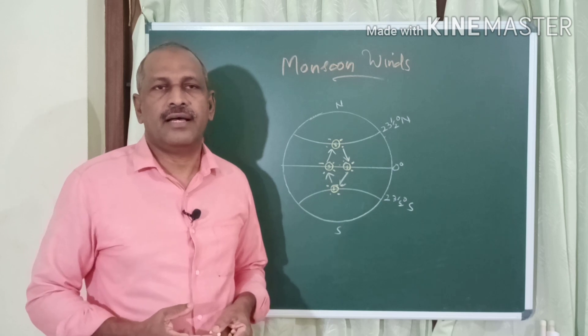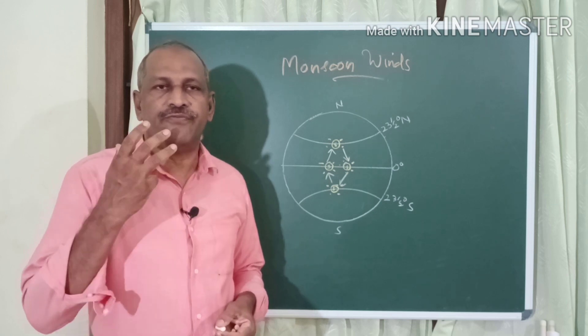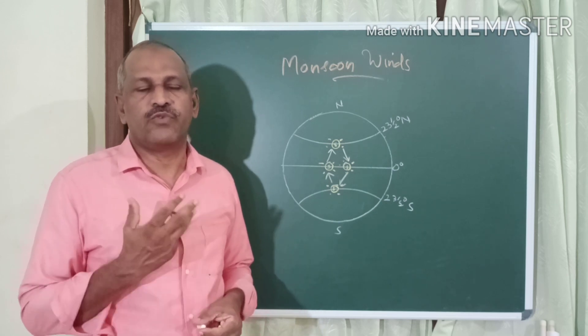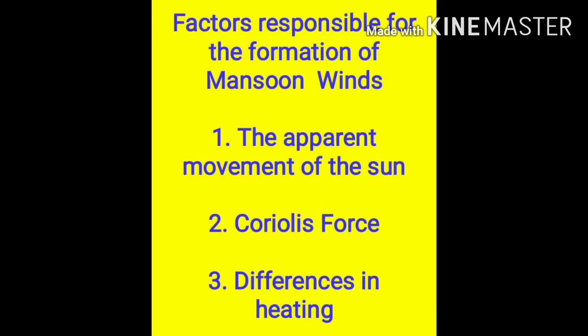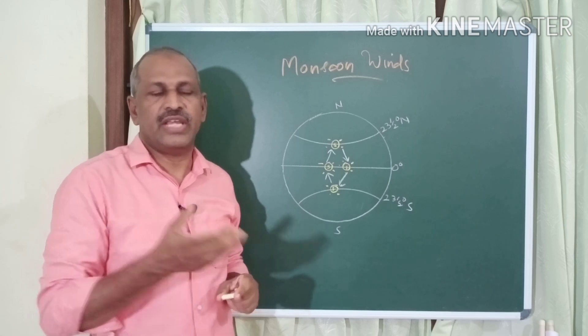Let us see the three factors responsible for the formation of monsoon winds. The factors are: first, the apparent movement of the sun; second, the Coriolis force; and third, differences in heating.